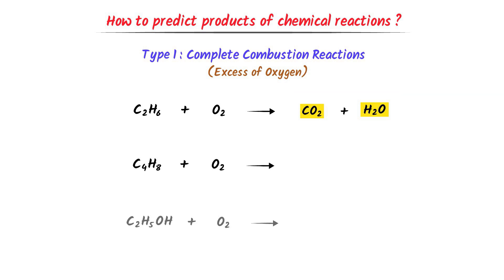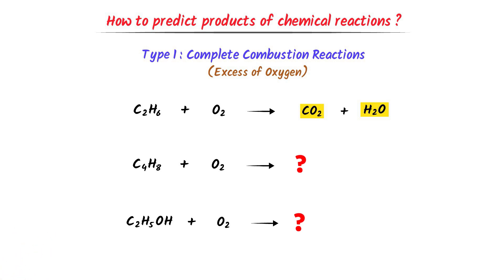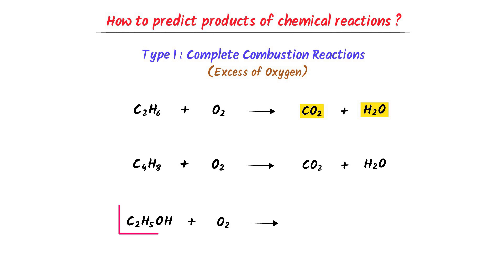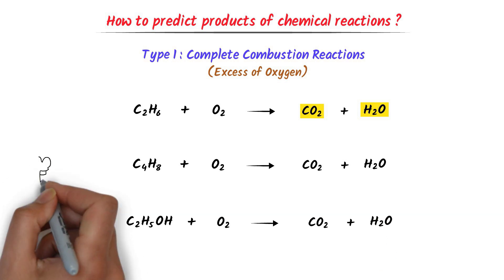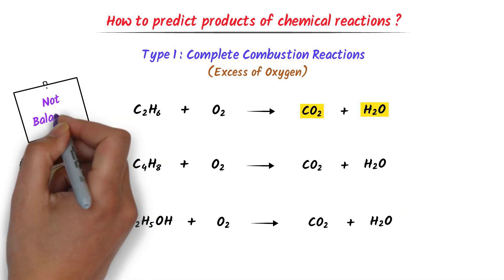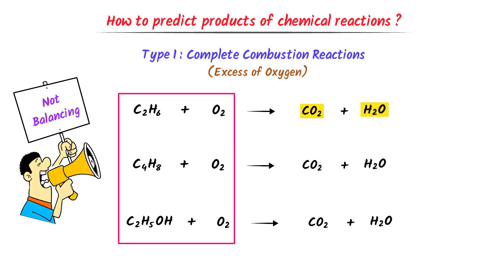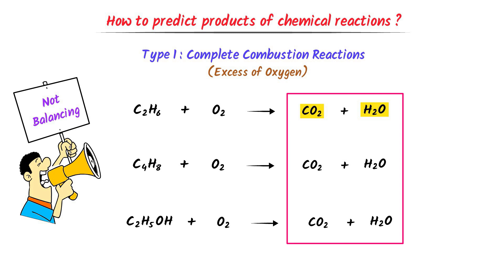Now consider these two combustion reactions. Can you guess the products? It is super easy. Butene reacts with oxygen gas to form carbon dioxide gas plus water. Similarly, ethanol reacts with oxygen gas to form carbon dioxide gas and water. In case of complete combustion reactions, if organic compounds react with excess oxygen gas, we will always get carbon dioxide gas plus water.